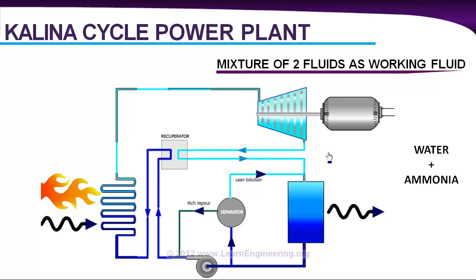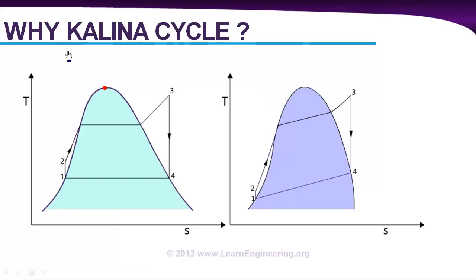To get an answer for this question, let's see temperature entropy diagrams of a conventional cycle and a Kalina cycle. Here it is. The first one is a T-S diagram for a conventional Rankine cycle and this is a T-S diagram for a Kalina cycle. So here you can notice a major difference between these two.